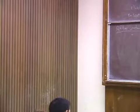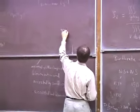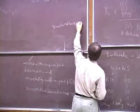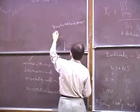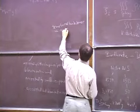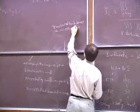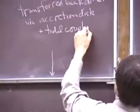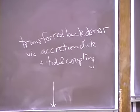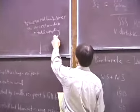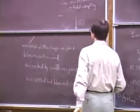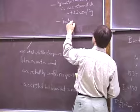What can happen to the angular momentum? Two standard possibilities are that it's transferred back to the mass donor via viscosity in an accretion disk followed by tidal coupling at the disk's outer edge, or that most of the angular momentum is lost with the mass in the wind.